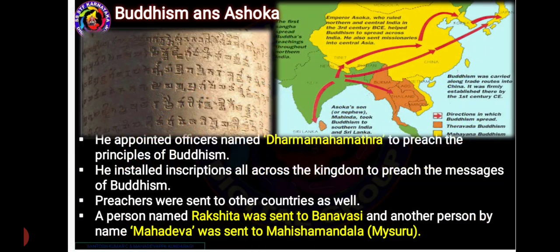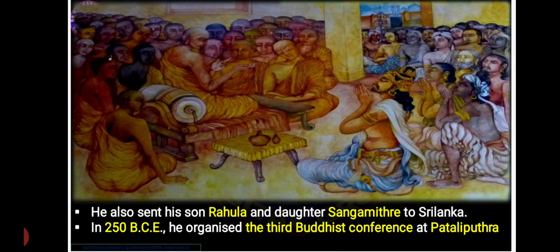Ashoka appointed officers named Dharma Mahamatra to preach the principles of Buddhism and sent preachers to other countries. Rakshita was sent to Banawasi and Mahadeva was sent to Mahishamandala, or Mysuru. He even sent his son Rahul and daughter Sangamitra to Sri Lanka. In 250 BCE, he organized the third Buddhist conference at Pataliputra.